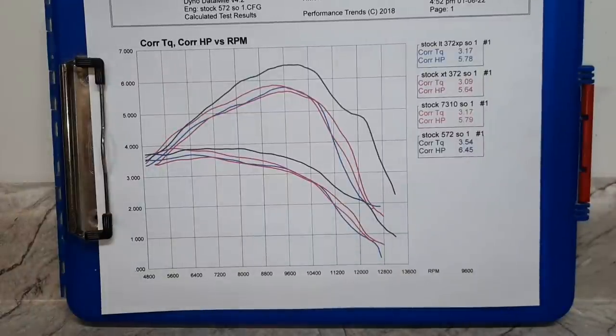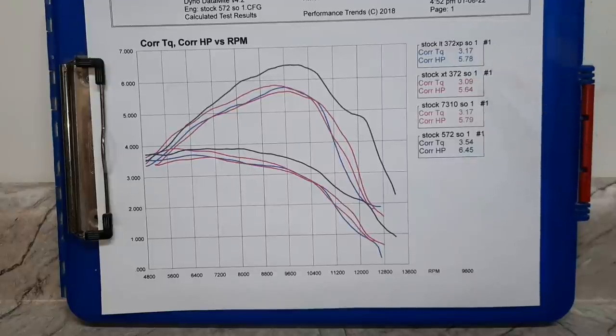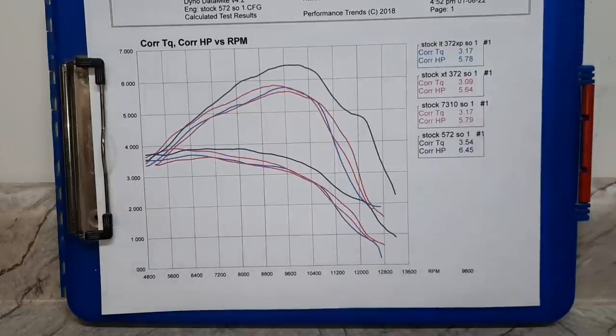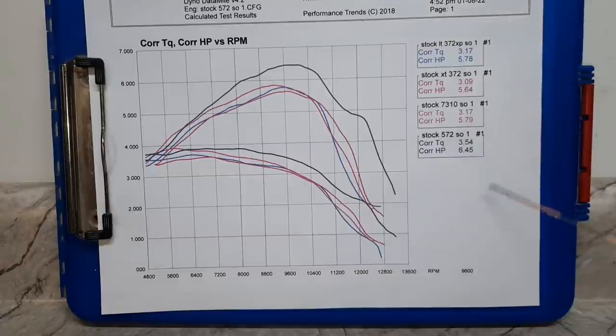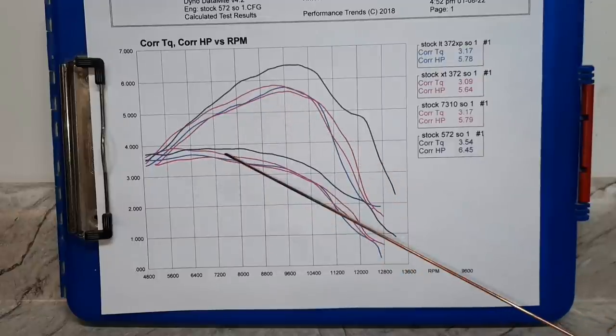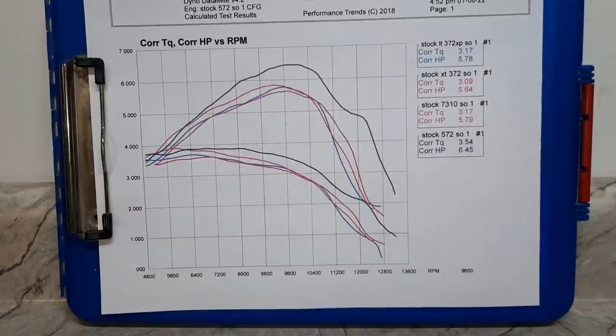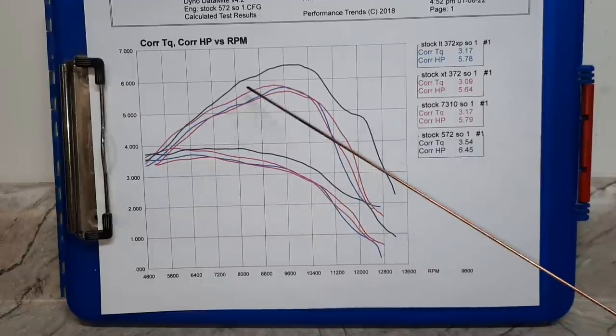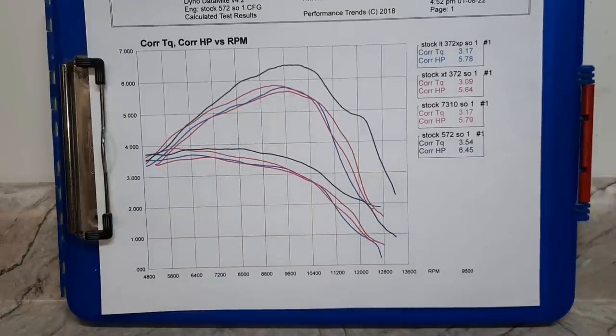These four on the graph were the bottom four: the OE 372, X-torque 372, the Echo 7310, and the Husqvarna 572. The numbers in this box taken at 9,600 RPM. Just like everybody says, the Echo 7310 is very similar to the Husqvarna 372. It has a bit more torque, but they peak about the same type of power.